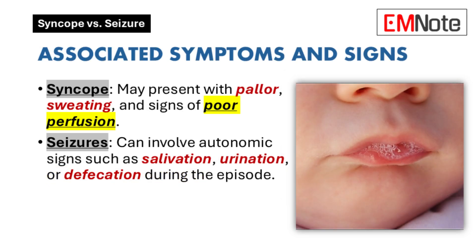Associated Symptoms and Signs: Syncope may be accompanied by symptoms like pallor, sweating, and signs of poor perfusion, suggesting decreased blood flow to the brain. Seizures can involve autonomic symptoms, such as excessive salivation, urination, or defecation, which occur during the episode due to altered brain function.